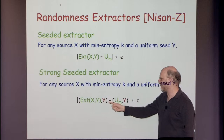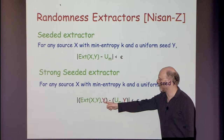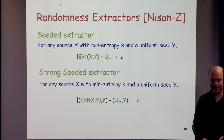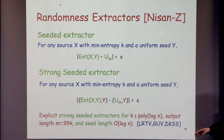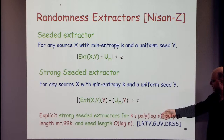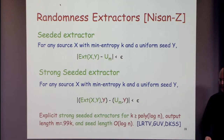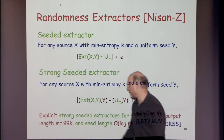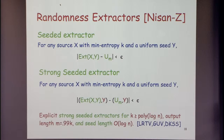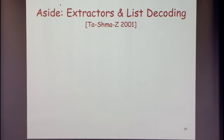A strong seeded extractor has a stronger property: the extractor output is uniform even conditioned on the seed y. This is interesting even if y is quite large. We have very good seeded extractors where, as long as the min entropy is at least poly-logarithmic, we can output almost all the randomness — the output length is say 99% of the min entropy, and the seed length is logarithmic.